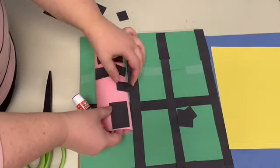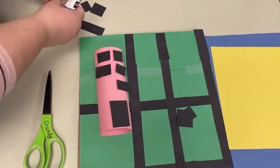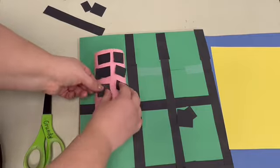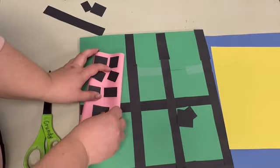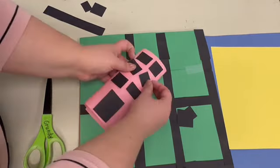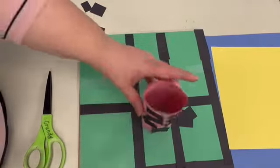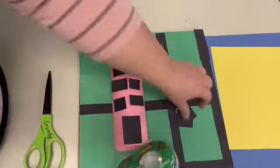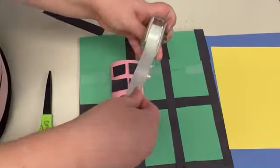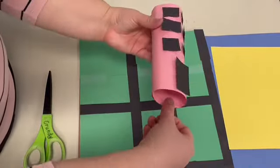You of course can decorate your buildings however you wish and make them whatever size or shape that you'd like. So once I did that I decided to attach my building to my base using tape. You of course don't have to permanently attach it to your city. You can also just have them stand freestanding if you want to move them around.